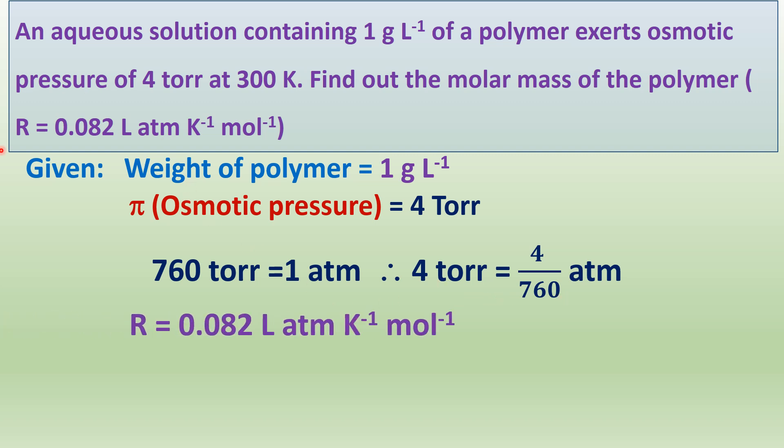The R value is given as 0.082 liter atmosphere kelvin per mole. From the given data, what is the formula that can be used to calculate the molar mass of the polymer?